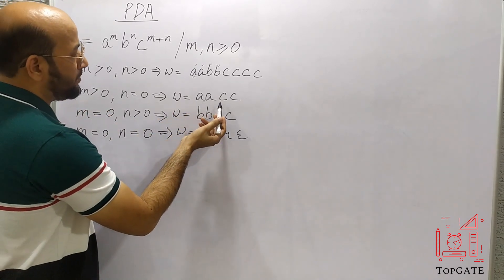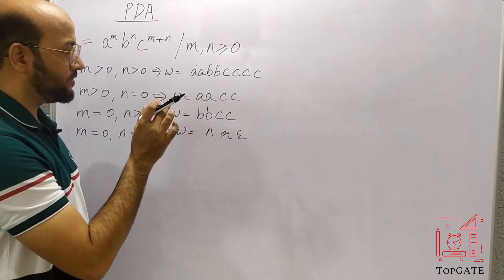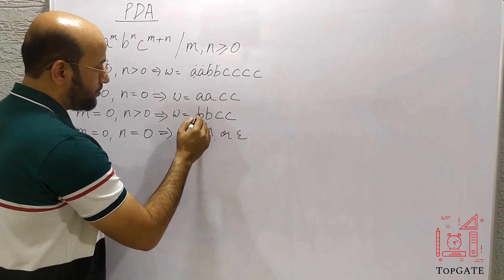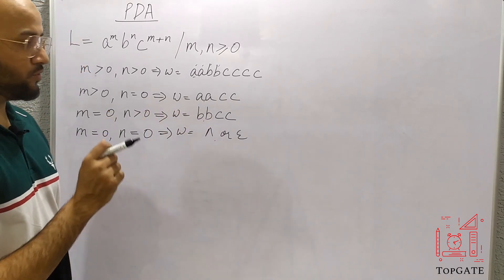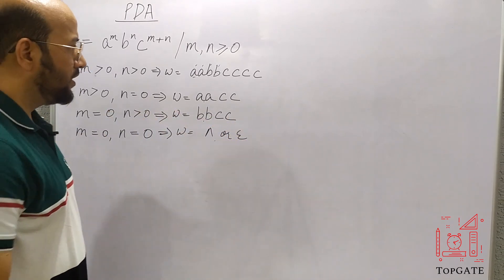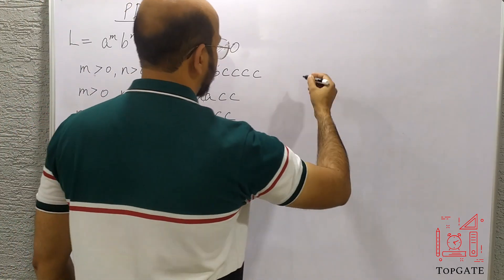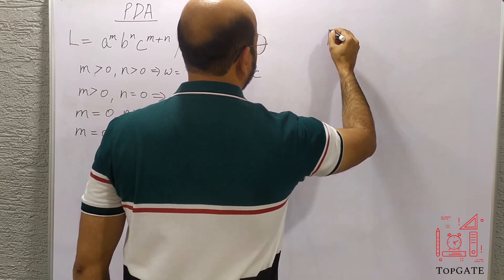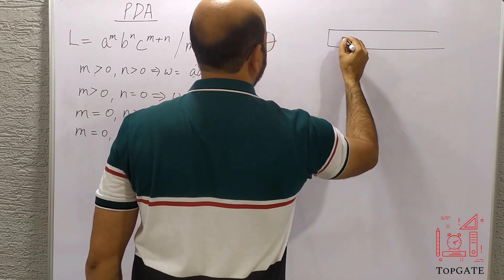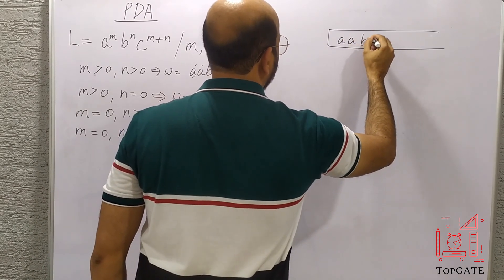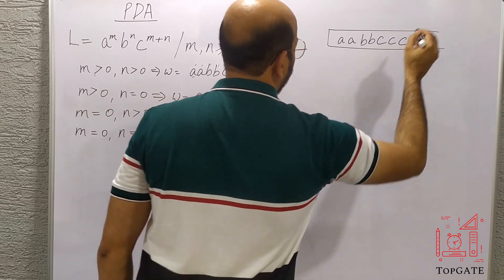Let's start the first case. Take the string a, a, b, b, c, c, c, c on the input tape, followed by epsilon. The pointer is currently on the first a, and the stack initially contains z0.